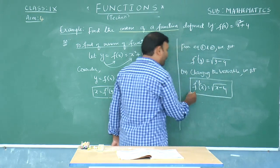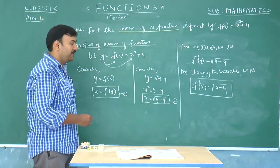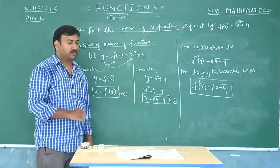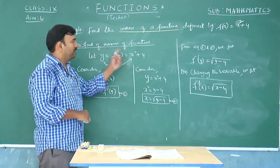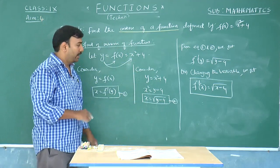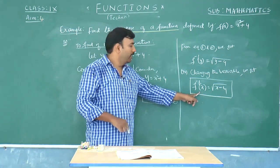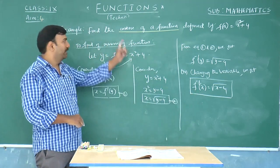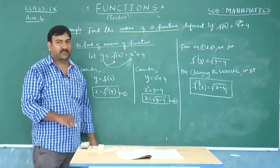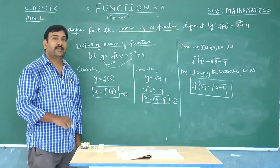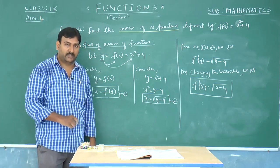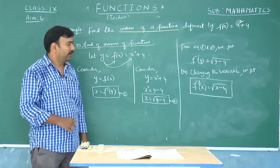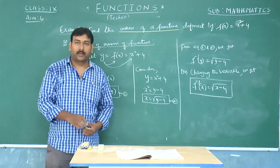So here we have found the inverse of a function, but not the inverse function. We have to be very careful: check whether he asks you to find the inverse function or the inverse of a function. Remember the notations for both remain the same, so observe the question carefully. To find the inverse function, it is required to prove it is a bijection; to find the inverse of a function, it is not required. With this, we have concluded aim number 4.